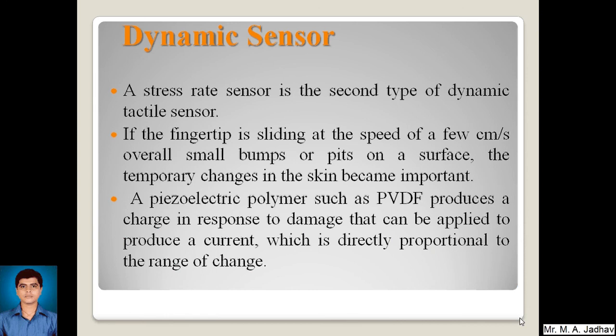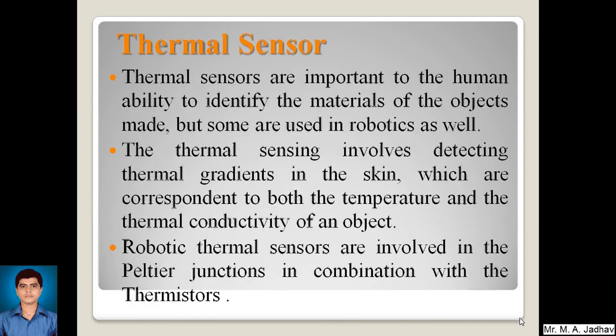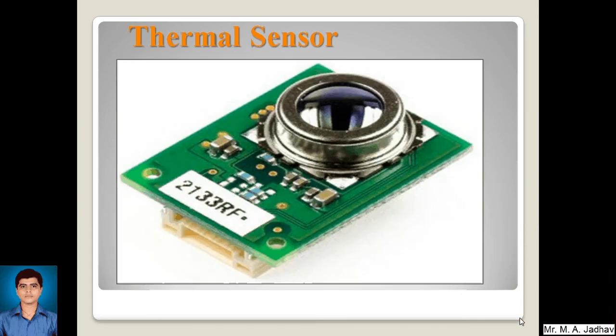Thermal sensors are important to the human ability to identify the material of objects, and some are used in robotics as well. Thermal sensing involves detecting thermal gradients in the skin, which correspond to both the temperature and the thermal conductivity of the object. Robotic thermal sensors involve Peltier junctions in combination with thermistors.